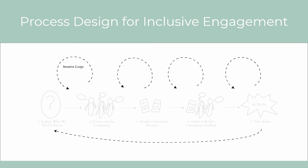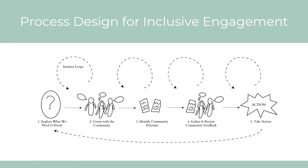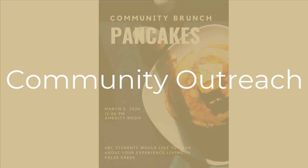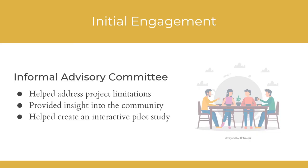It is important to consider what resources are available to avoid false promises and remain realistic. This process also continuously reflects back to keep stakeholders informed and to seek feedback throughout the project. We have applied this model for engagement and acknowledge that in reality there are additional influences that direct the flow of the process. To guide our work, we assembled an advisory committee from residents in Southeast False Creek. The committee helped us understand the community and critique the process we created.